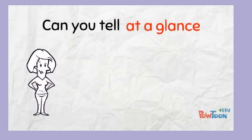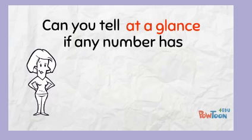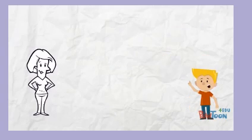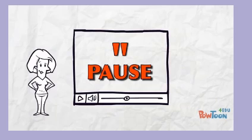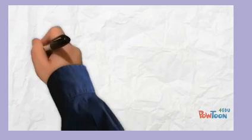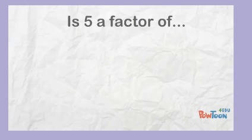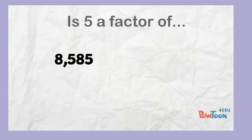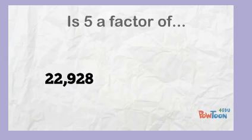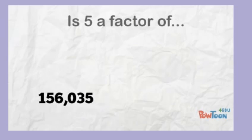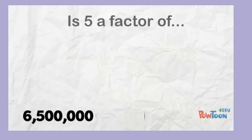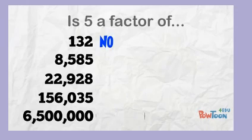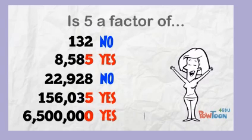Let's see if you can tell at a glance if any number in this group has 5 as a factor. Hold up your YES or NO answer to show your teacher. Is 5 a factor of: 132 — 8,585 — 22,928 — 156,035 — 6,500,000? If you said No, Yes, No, Yes and Yes — then you've got it!